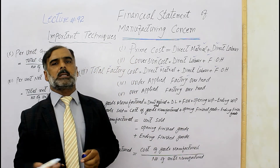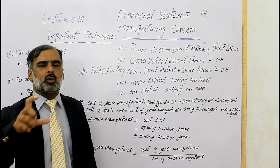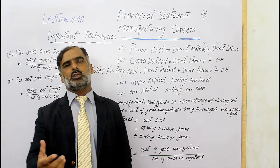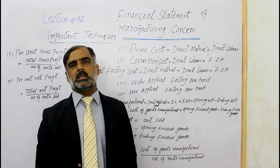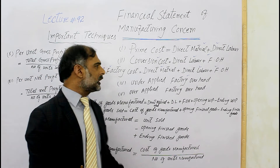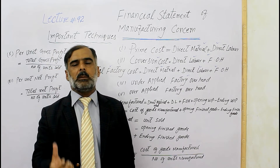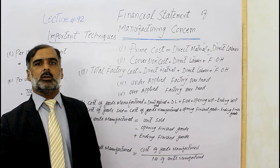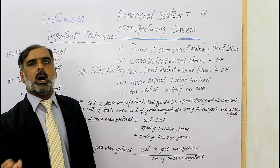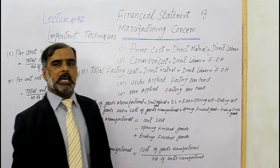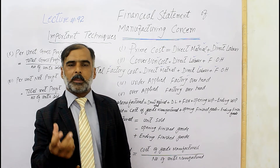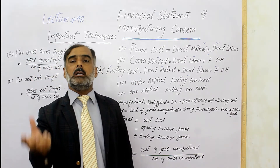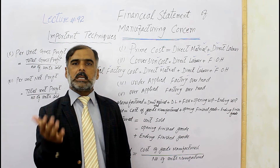When we talk about factory overhead, we consider how much the actual cost is and how much is applied. The actual cost is our original cost. For example, if the actual cost is 10,000 but we apply only 8,000, this means the cost is under-applied. Under-applied means we applied 8,000 against an actual cost of 10,000.